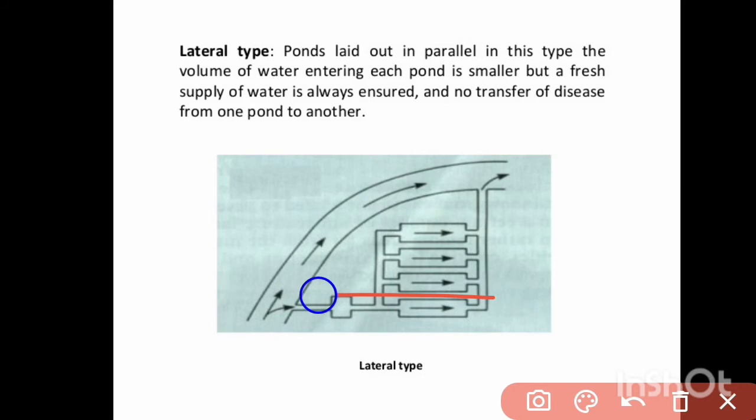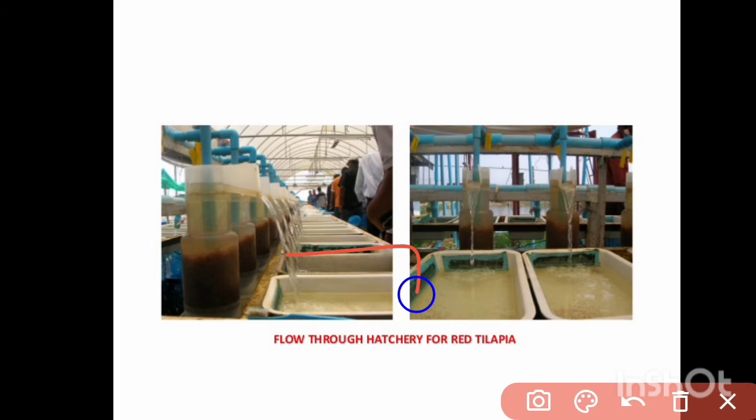As you can see in the flow-through system diagram, the lateral type ponds are parallel to each other — not in series. Each has its own particular water supply, so disease in one pond stays contained and does not spread to others.